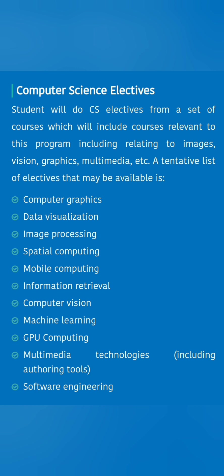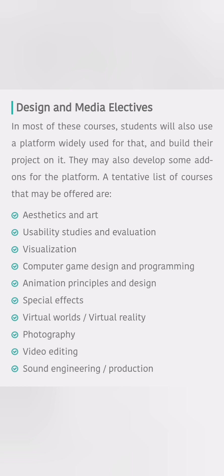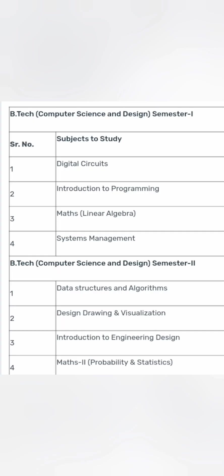From the course perspective, it provides a lot of computer science electives and design electives. For computer science, you can choose from computer graphics, data visualization, image processing, spatial computing, mobile computing, GPU computing, machine learning, software engineering, and multimedia technologies. For design and media electives, you can choose from aesthetics and art, usability studies, visualization, special effects, photography, video editing, sound engineering, and computer game design and programming.